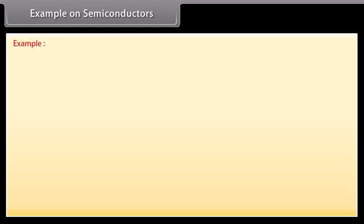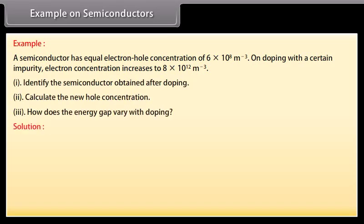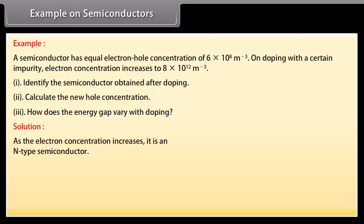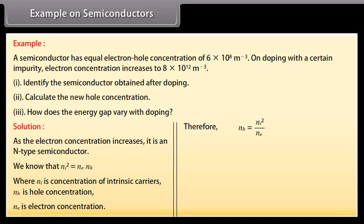Example: A semiconductor has equal electron-hole concentration of 6×10⁸ per meter cube. On doping with a certain impurity, electron concentration increases to 8×10¹² per meter cube. As the electron concentration increases, it is an N-type semiconductor. Using ni² = Ne × Nh, where ni is the concentration of intrinsic carriers, Nh is hole concentration and Ne is electron concentration, therefore Nh = ni² / Ne. Substituting the values, Nh = 4.5×10⁴ per meter cube.